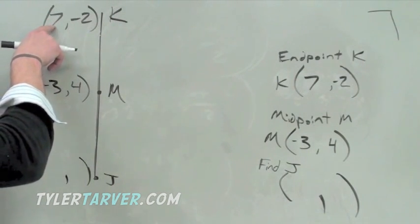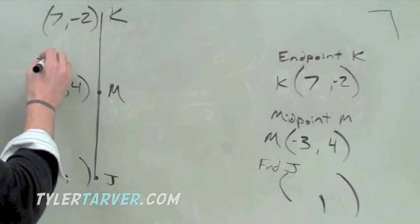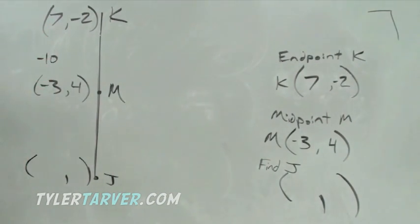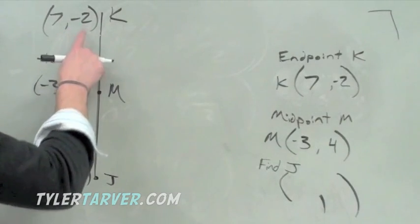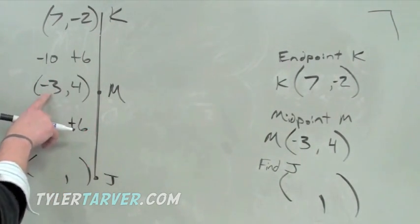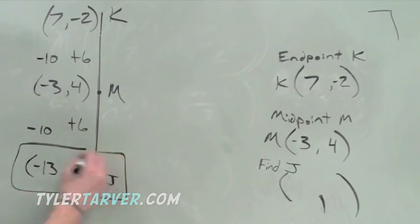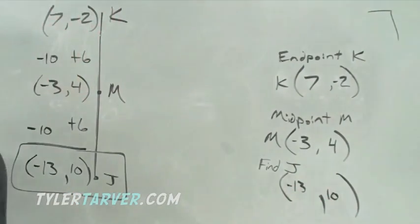We find out what you do to 7 to make it negative 3. We know we're going to have to subtract something. We would subtract 10. You subtract 10 from 7 to get negative 3. What would you do to negative 2 to get 4? Negative 2 to get 4, you would have to add 6. Well, guess what? If that's the change to go from there to the midpoint, since that's the exact middle, you have to do the same thing to go from the midpoint to the other endpoint. So we'd have to subtract 10 and add 6. Negative 3 minus 10 is going to go deeper in the negative zone to negative 13. 4 plus 6 is 10.